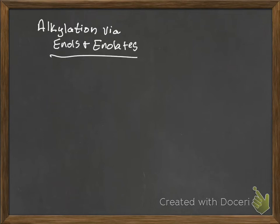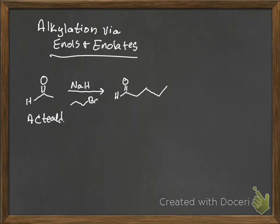So let's move on from bromination, and then let's talk about alkylation via enols and enolates. So let's go ahead and take a look at this. We'll take a look at what happens with our friend acetaldehyde. And let's say NaH and then 1-bromo-propane. Here's the product: one, two, three, where this is added here.